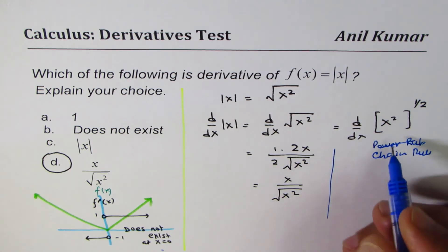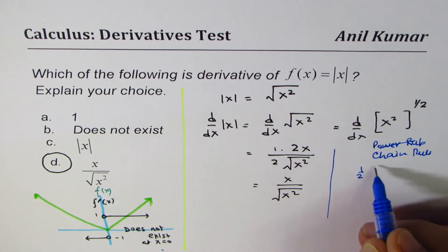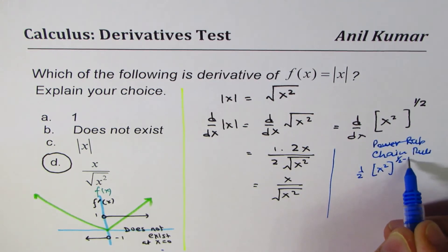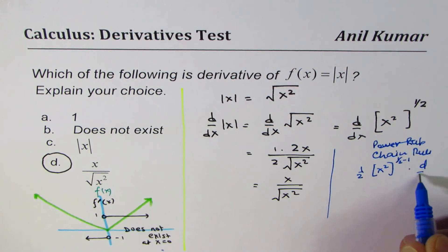So, I am redoing this for you. So, it is like half of x squared to the power of half minus 1 times derivative of x squared, correct? That's the chain rule.